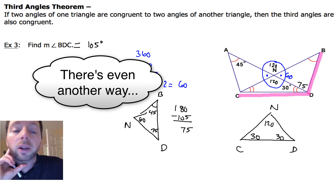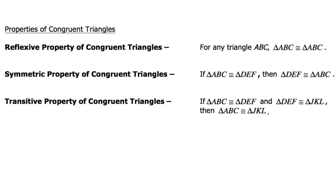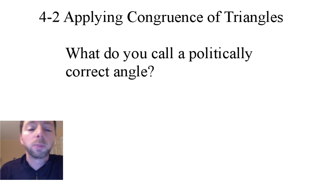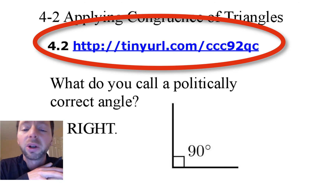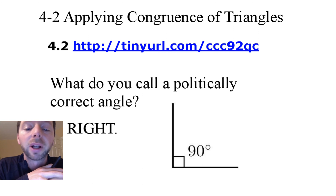Most of you are just going to hit pause and copy these pieces down, because these are similar properties you've already seen before for segments, angles, or algebra properties — and now the same kinds of things are just going to apply for congruent triangles. Go ahead and hit pause and copy these pieces down. Now for the answer to our joke: what do you call a politically correct angle? If you noticed at the beginning of the video, which way did my head turn? To the right. So the answer is a right angle. Make sure you complete your survey and I will see you guys later on in class. Have a great day.